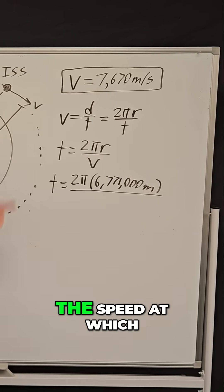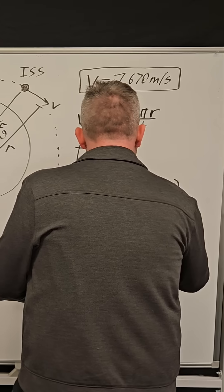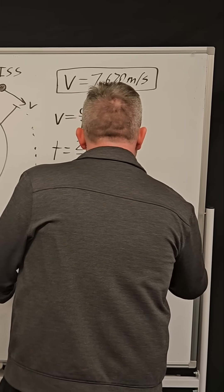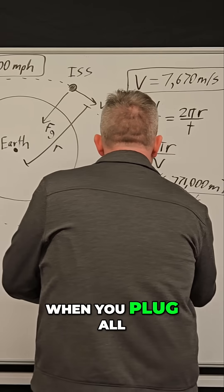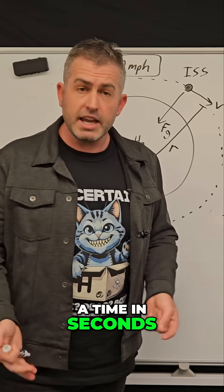the velocity, the speed at which it's moving, 7,670 meters per second. And that will give us—when you plug all this into your calculator and solve—a time in seconds.